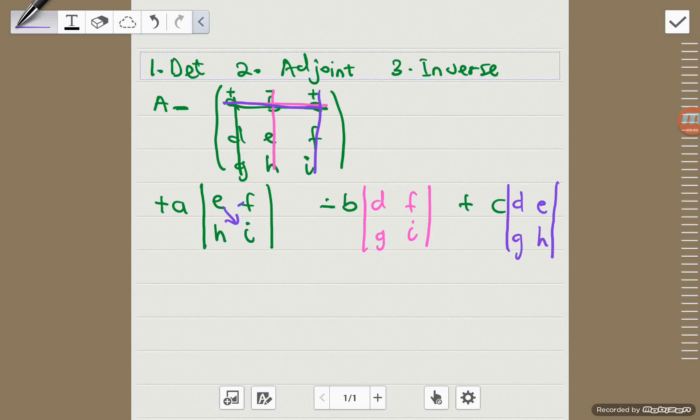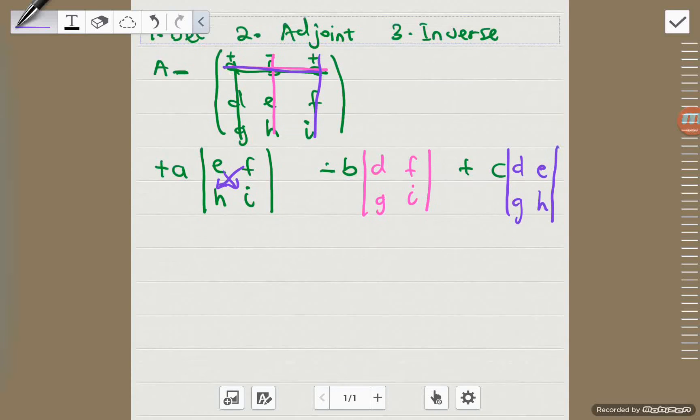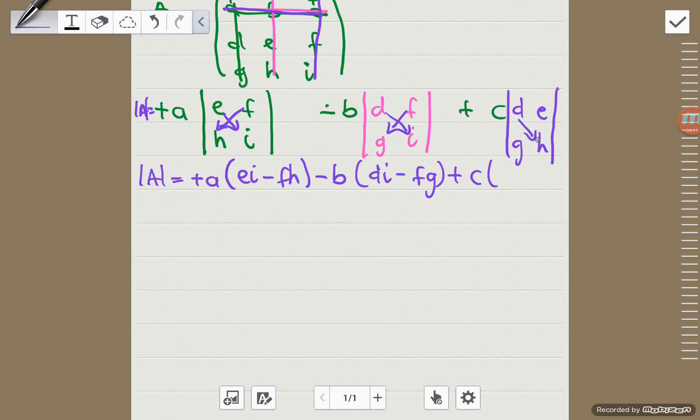which is the product of the leading diagonal minus the product of the other diagonal. So finding the determinant of this matrix shouldn't be that hard. So the determinant of A equal to plus A times EI minus FH. Then we move on to the second component, which is minus B into the product of the leading diagonal minus the product of the other diagonal. So we have DI minus FG, then plus C into the product of the leading diagonal minus the product of the other diagonal, which is DH minus GE.